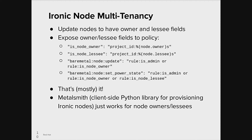We tested our code with single Ironic CLI commands, and then we tried something more complicated using Metalsmith, which is a client-side Python library for provisioning Ironic nodes. What we discovered was that Metalsmith just worked for node owners and lessees with our code. Owners and lessees could provision nodes that they owned or leased, and could not do so for nodes that they did not own or lease, which was exactly what we wanted.